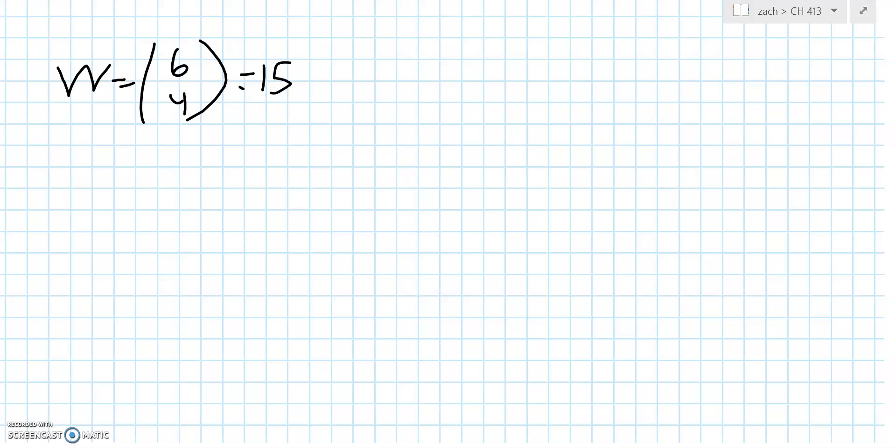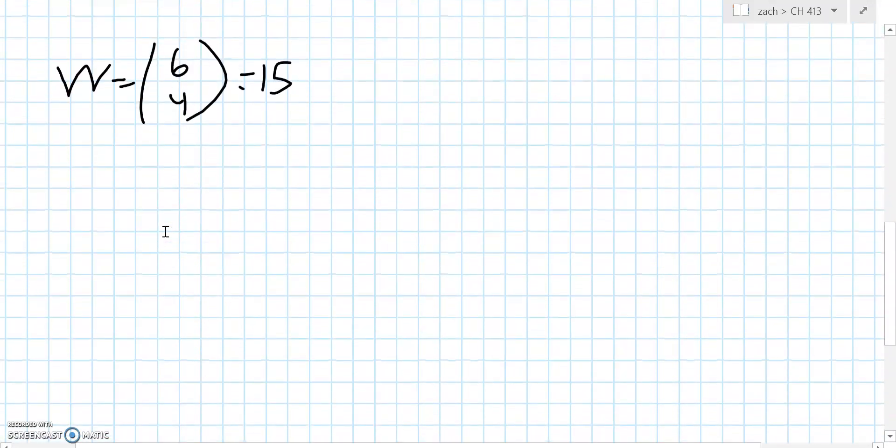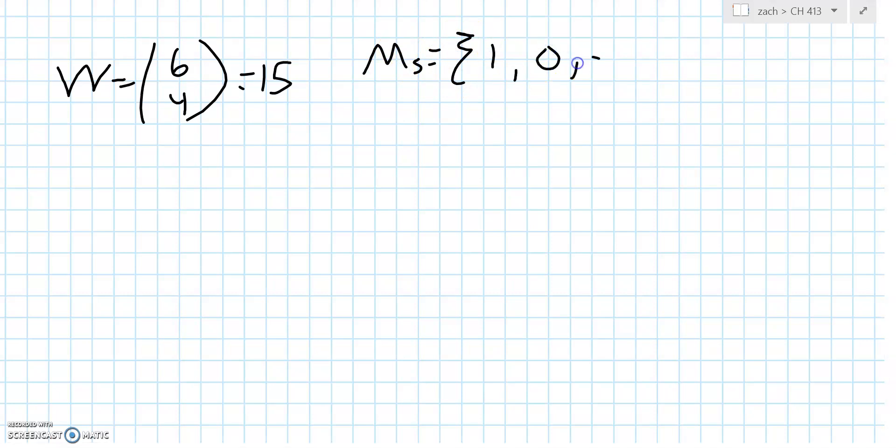We note that the possible choices, if we look up above, our possible choices, we can have a maximum spin of 1, right? We can have a maximum L of 2. So with this, we can sort of take a look at a bit more information. Now we know that the M sub S can range from 1, 0, minus 1. And M sub L ranges from 2, 1, 0, minus 1, minus 2.